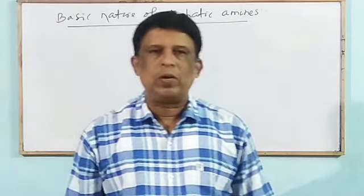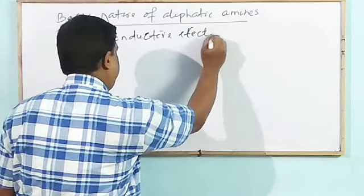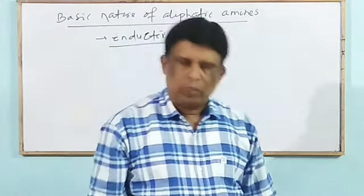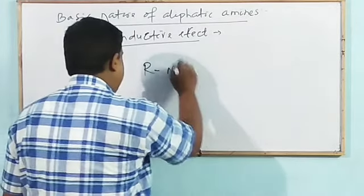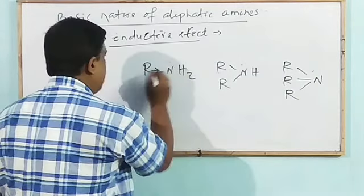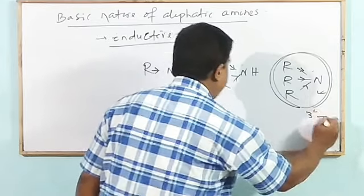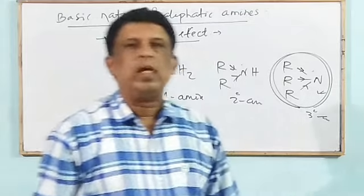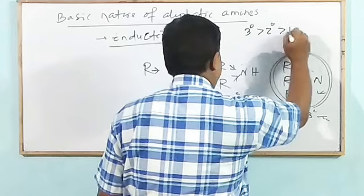If we consider the inductive effect: +I means increases the electron density, increases the basic nature; example is alkyl group. In primary amine (RNH₂) there is one +I group, in secondary amine (R₂NH) there are two +I groups, and in tertiary amine (R₃N) there are three +I groups. So maximum electron density in tertiary amine, then secondary, then primary. On the basis of inductive effect, basic nature order would be: 3° > 2° > 1° > ammonia. However, this is a theoretical concept.